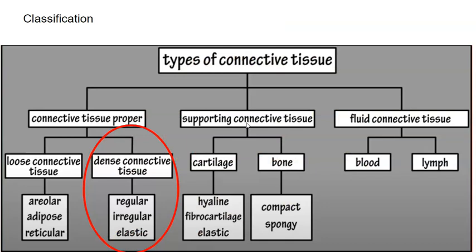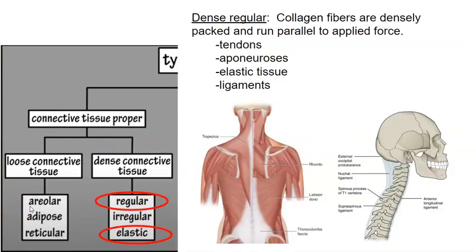Now let's look at dense connective tissue. There are three kinds: regular, irregular, and elastic. In dense regular tissue, the collagen fibers are densely packed, and this is key — they run parallel to each other or to some applied force.